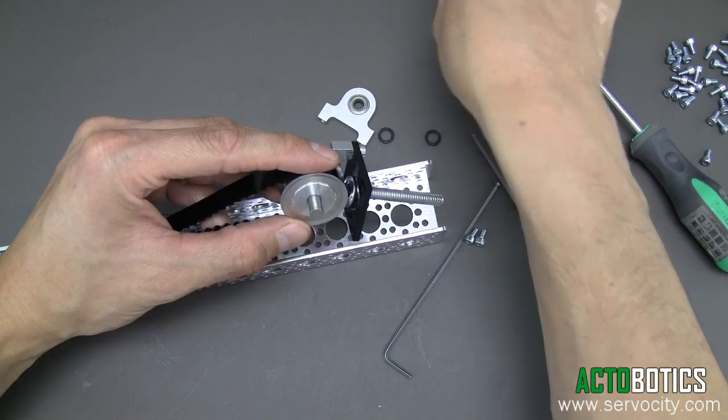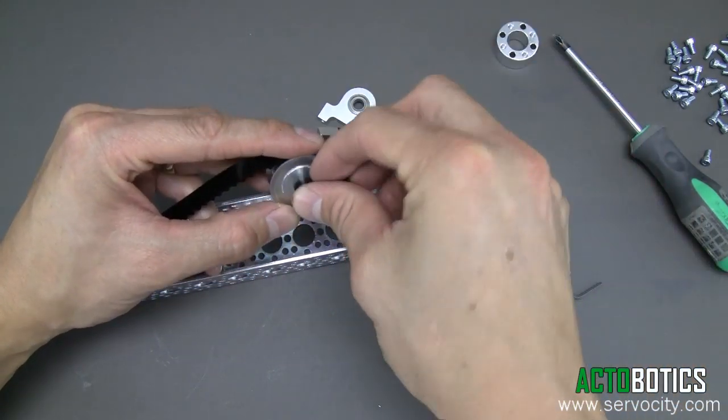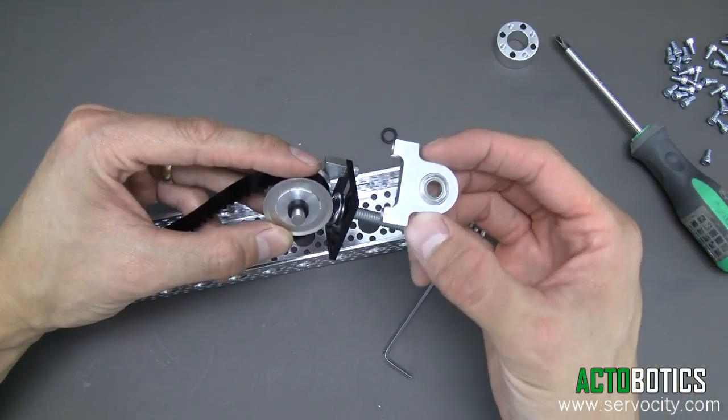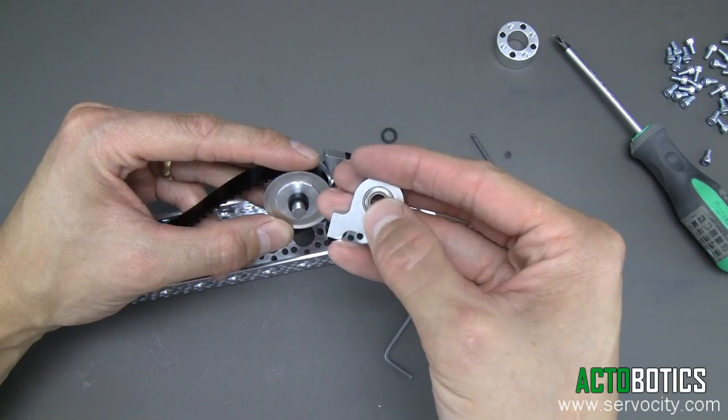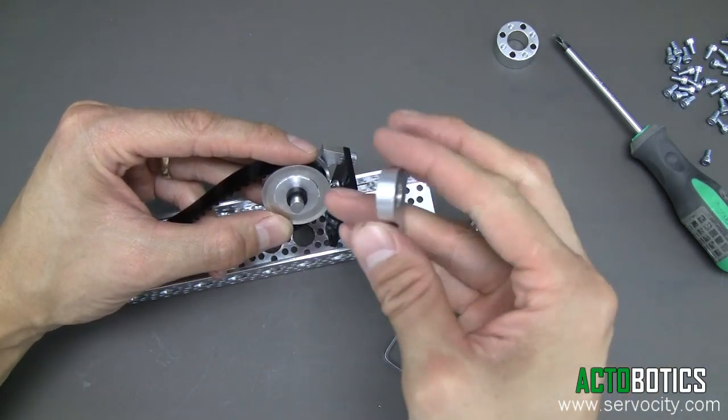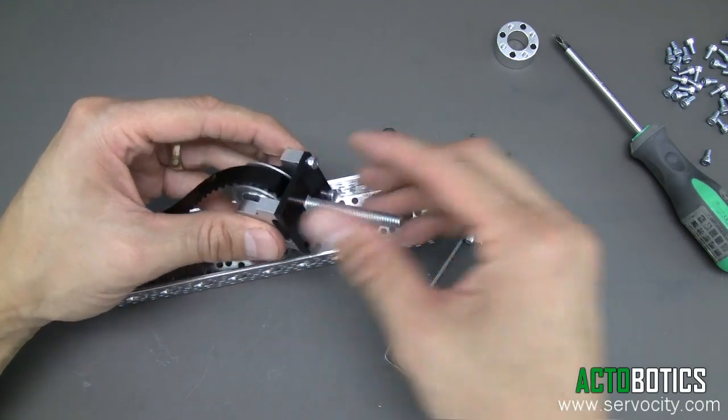Next, we're going to put two more little black quarter inch bore spacers in, just like so. Now we're going to grab this second pillow block. The section with the ball bearing pressed in is going to face towards the pulley.